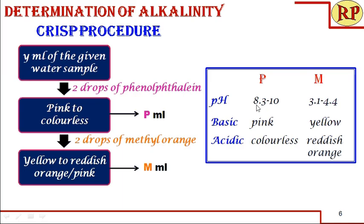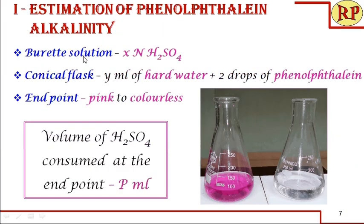Beyond pH 8.3, if alkaline substances are still present, phenolphthalein will not show us the endpoint, so we need methyl orange. We add two drops of methyl orange to the same solution. If basic substances are still present, it will be yellow. We titrate further with acid until it becomes reddish orange — it is better to stop at reddish orange rather than going to pink. We note the volume of sulfuric acid consumed at this endpoint as M ml. The conical flask contains water with two drops of phenolphthalein; when titrated with acid, at the endpoint it becomes colorless — pink to colorless — and we record P ml of sulfuric acid.